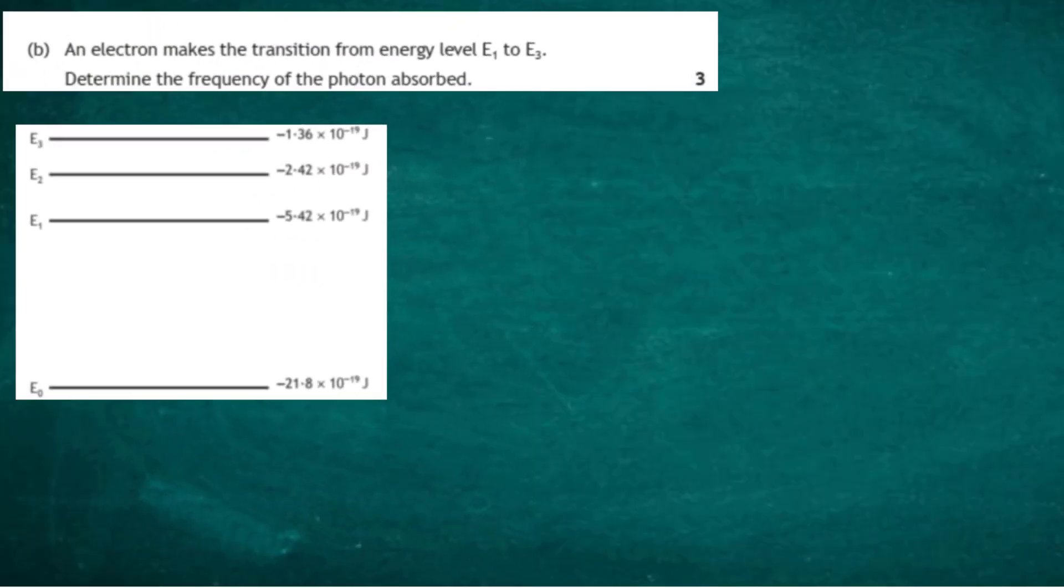Question 6b. An electron makes the transition from energy level E1 to E3, determine the frequency of the photon absorbed. Let's look at our diagram. We've got an electron sitting at energy level E1, and it's going to be promoted to energy level E3 by absorbing the energy of a photon. And that photon must have exact same energy as the energy difference between those two energy levels E3 and E1.